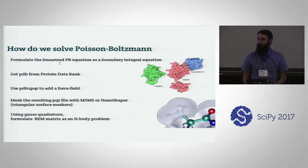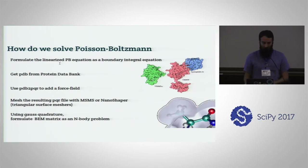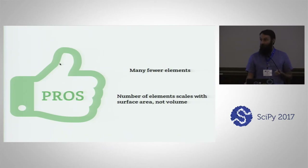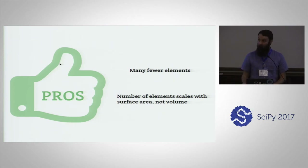We use Gauss quadrature and formulate the resulting matrix as an n-body problem. While molecular dynamics is hard because it's an n-body problem, our formulation has advantages: we have far fewer elements since we only discretize the surface, and we don't include n-body interactions from the solvent. Also, this scales as surface area instead of volume, which is more computationally favorable, especially compared to other solvers using finite volumes or finite differences which scale up less favorably.